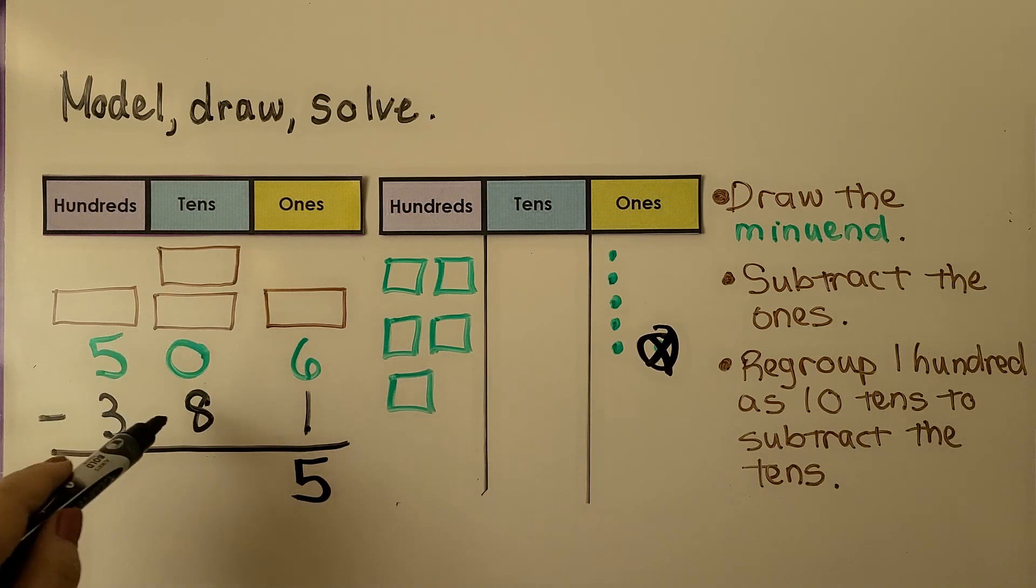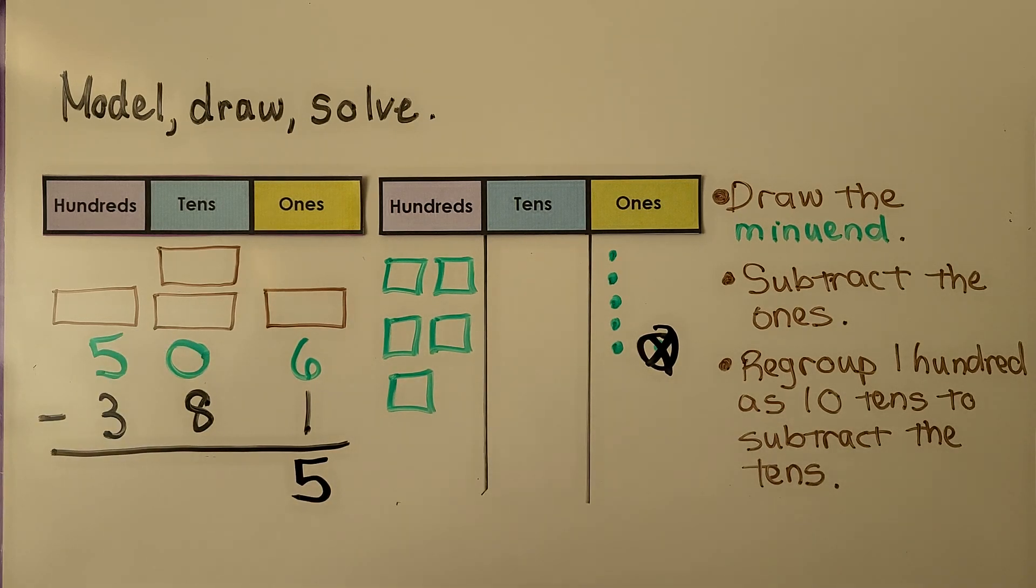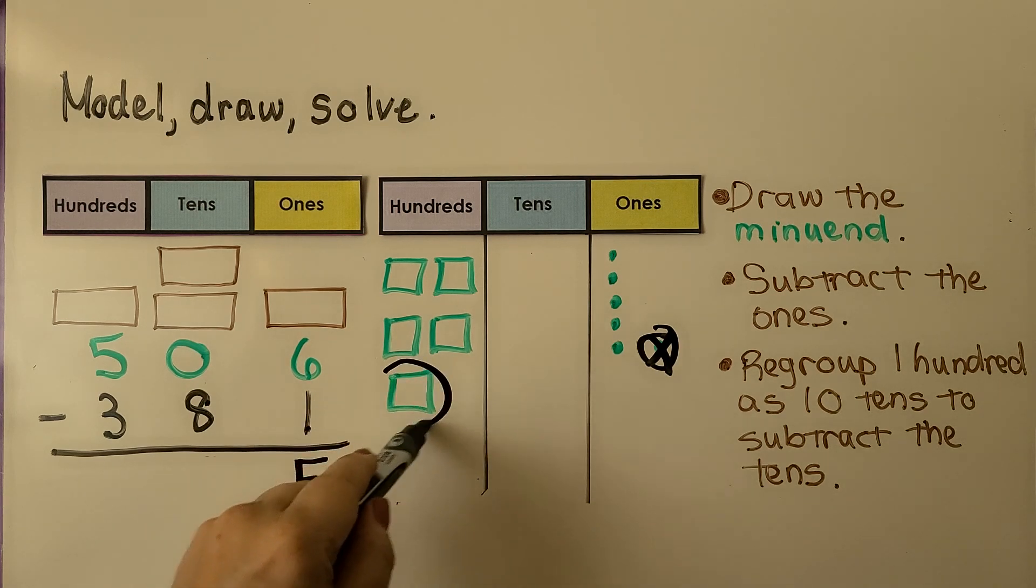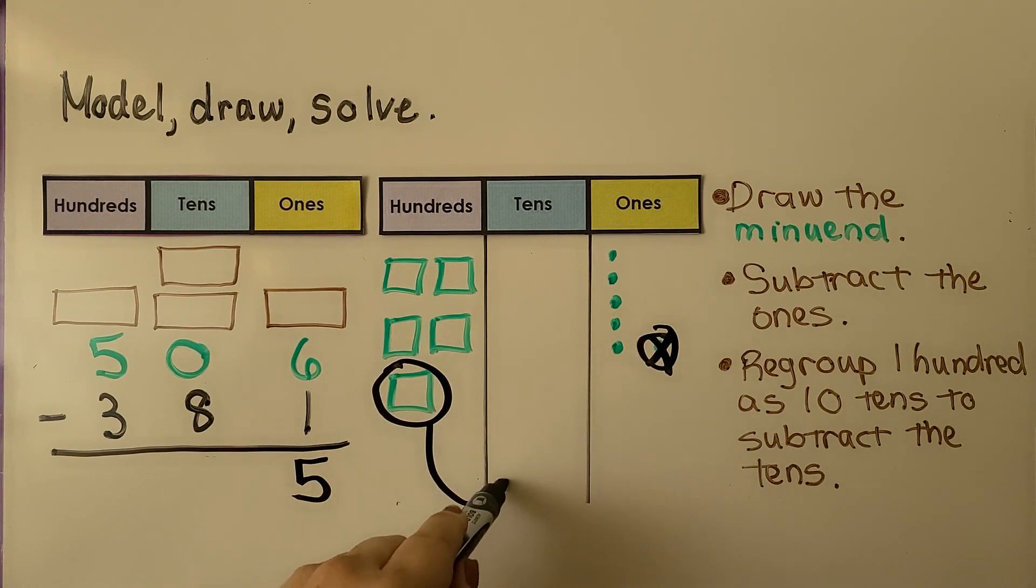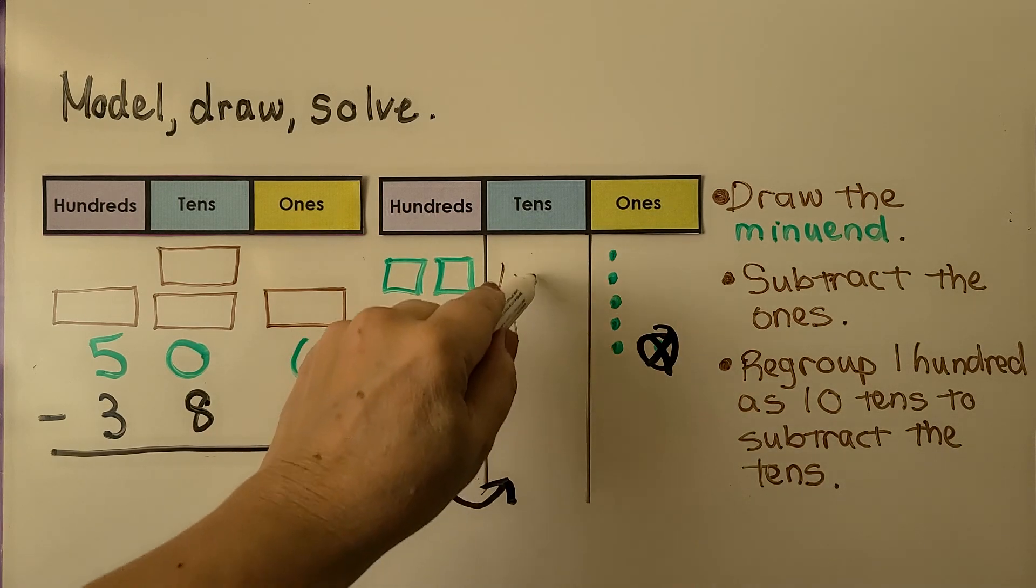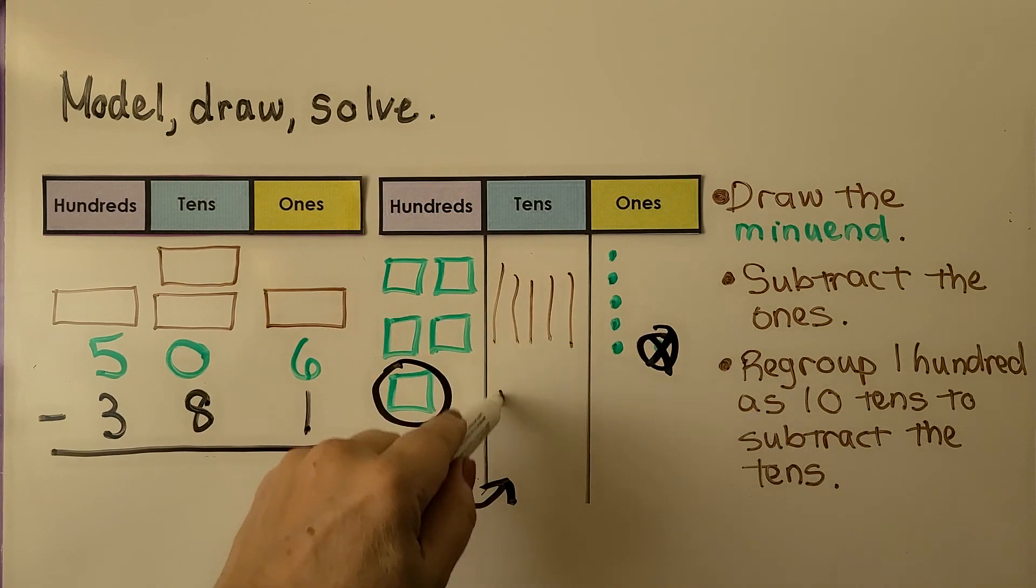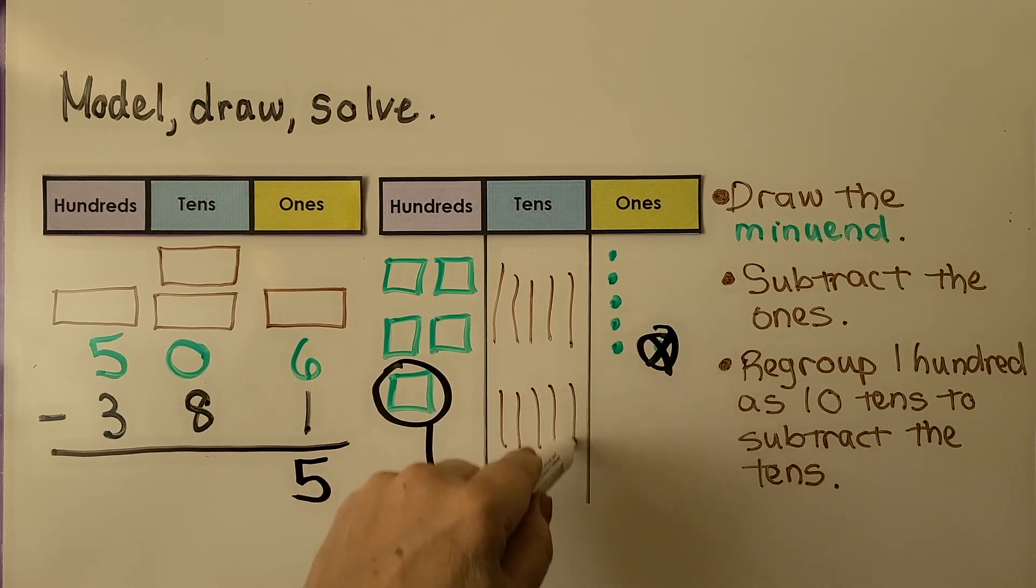Now we have zero tens and need to take eight tens away, but we don't have any. So what we can do is take this hundred, move it over to the tens place as one, two, three, four, five, six, seven, eight, nine, ten tens.